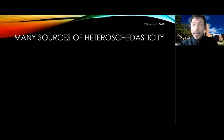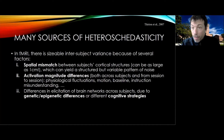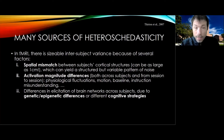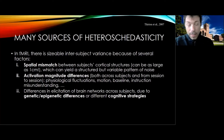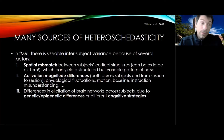Heteroscedasticity being a principal problem — where does it come from in terms of our group analysis? A number of different possible areas could lead to heteroscedasticity. For one, there's just a spatial mismatch between subjects and cortical structures. This can be fairly sizable, meaning that just by mismatching the registration — either registration errors or actual differences in neuroanatomy, in functional neuroanatomy across people — you can get structured but changing patterns of noise.